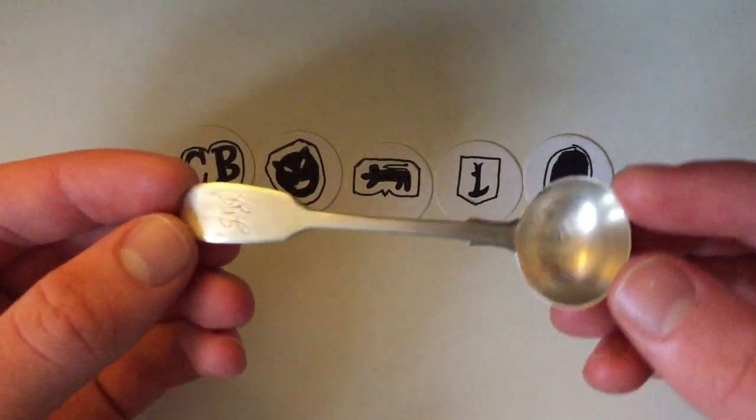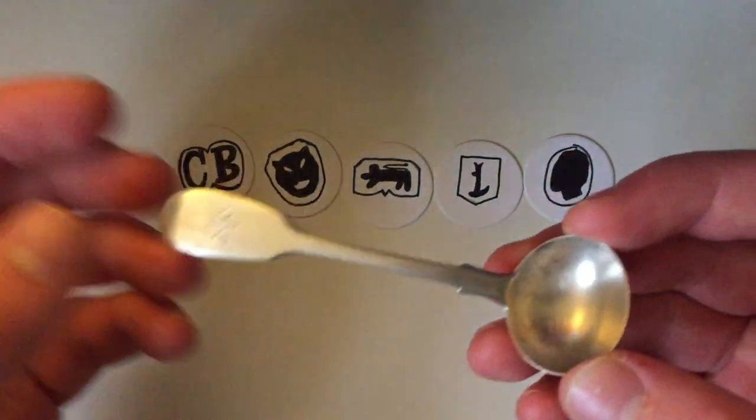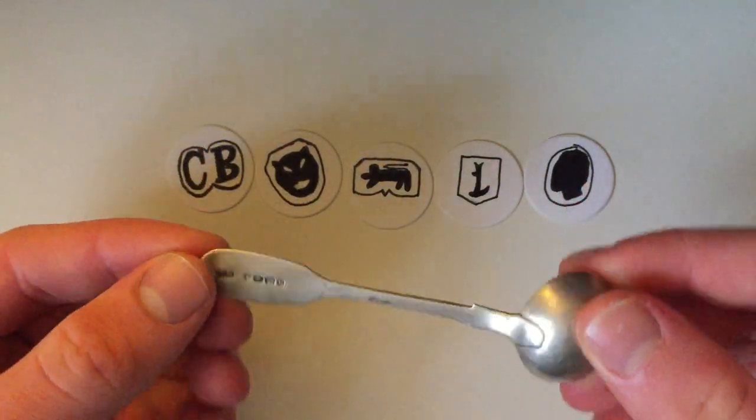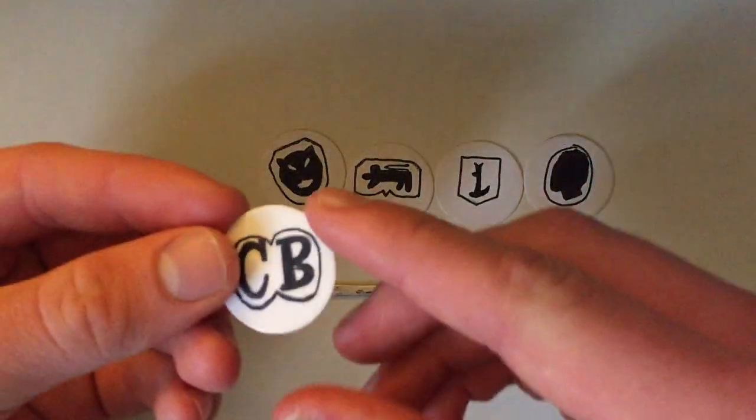The spoon weighs about 11.5 grams, so you're probably talking about 0.38 troy ounces, for those of you who are interested in that. And of course, it's sterling silver. So let's take a closer look at the hallmarks, which I've drawn up.